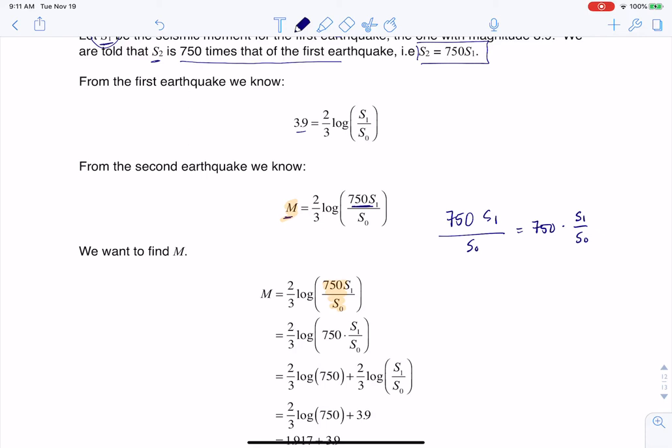So 750 S sub 1 in ratio to S sub 0, I can make this 750 times S sub 1 over S sub 0. So you're allowed to manipulate the fractions that way. And the reason that I want to do that is because I want to use properties of logarithms. When my logarithm is a product, I can use the product property. So I can say this is 2 3rds times the log of 750 plus the log of S sub 1 over S sub 0.